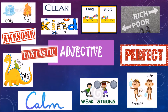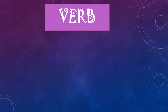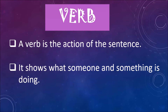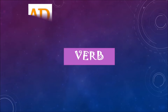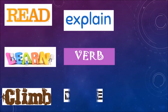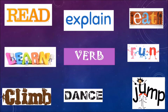Next is verb. A verb is the action of the sentence — it shows what someone or something is doing. These are all the examples of verb.